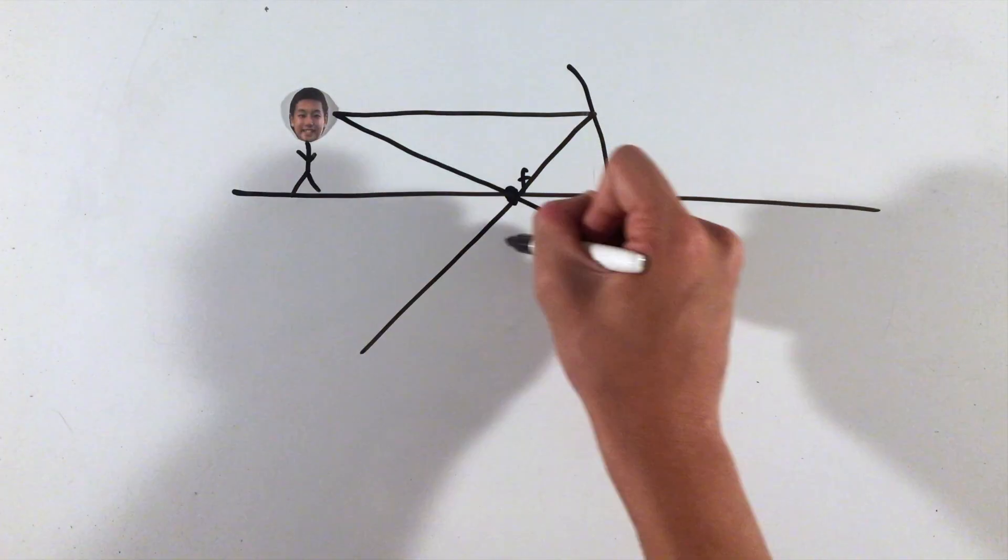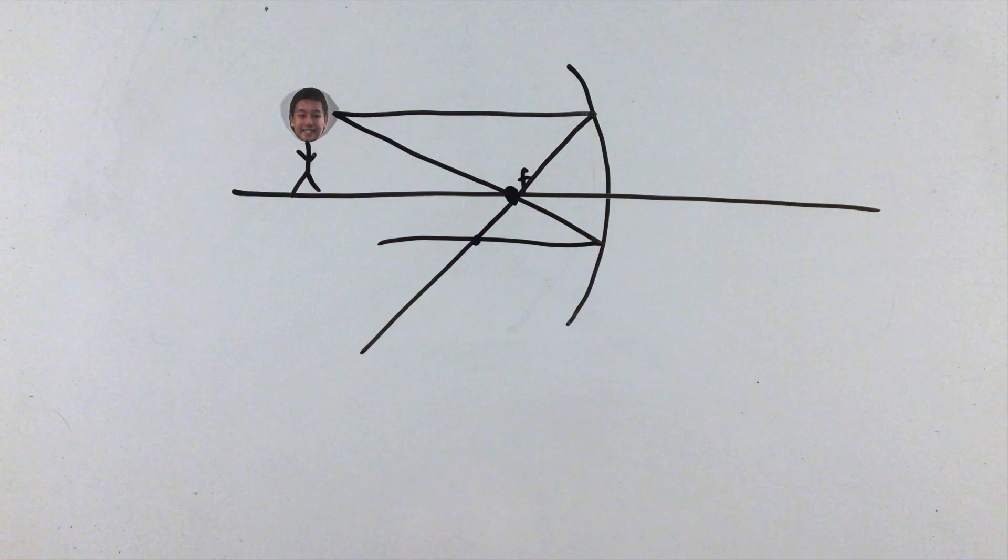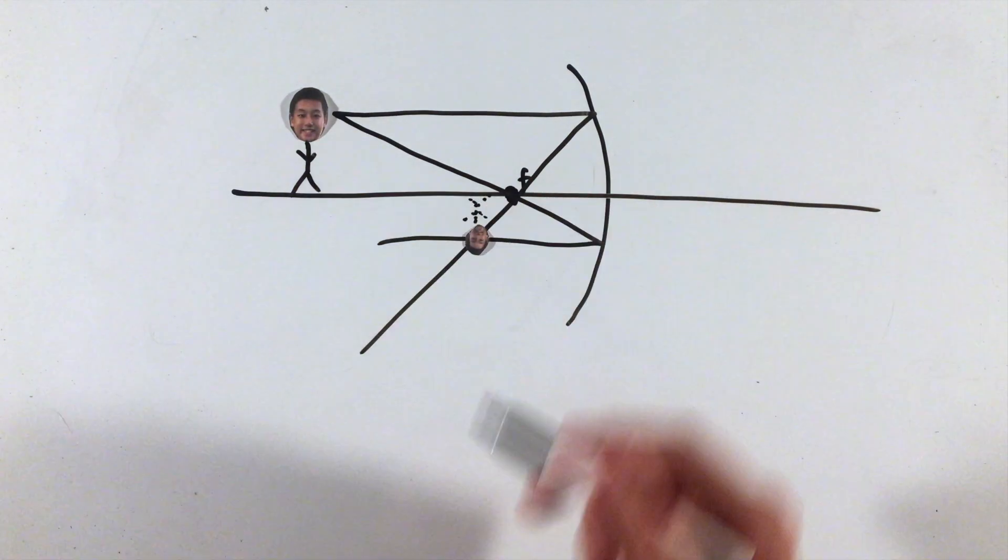Next, draw a second ray that goes through the focus, which reflects off the mirror parallel to the principal axis. The intersection of these two reflected rays is where the top of the image will lie. This diagram helps us see the location, orientation, size, and type of image that is produced.